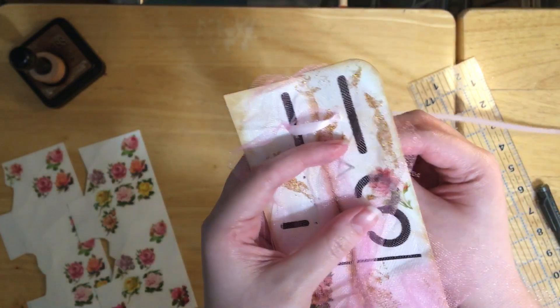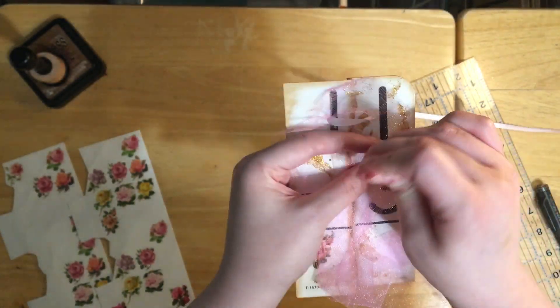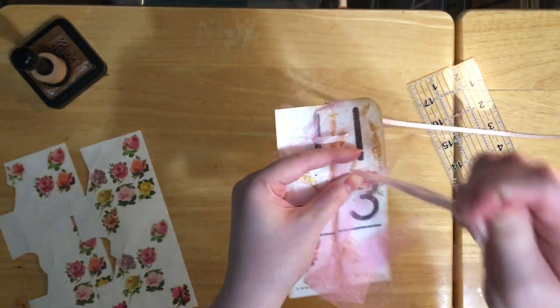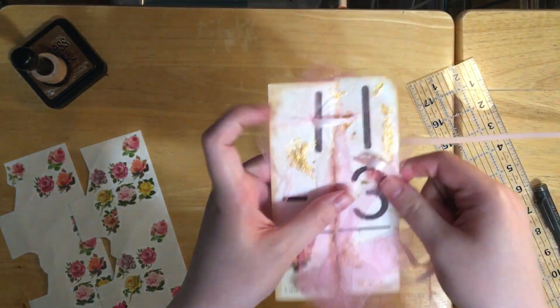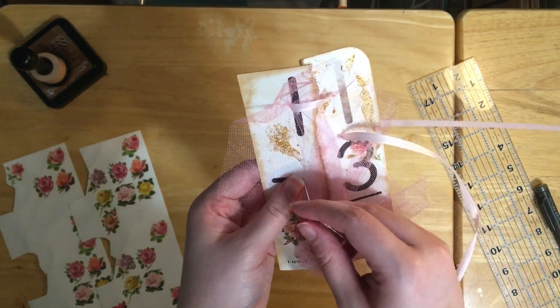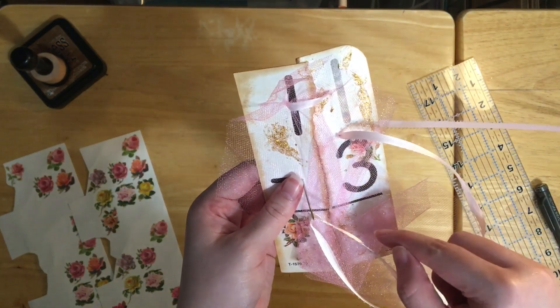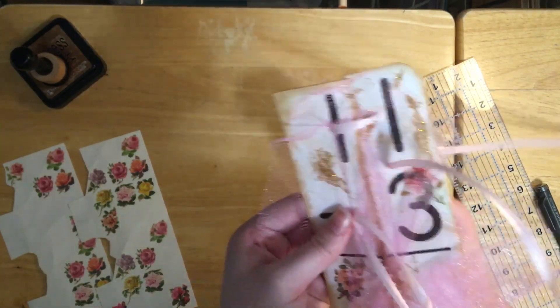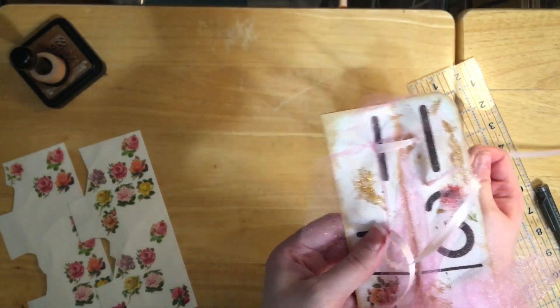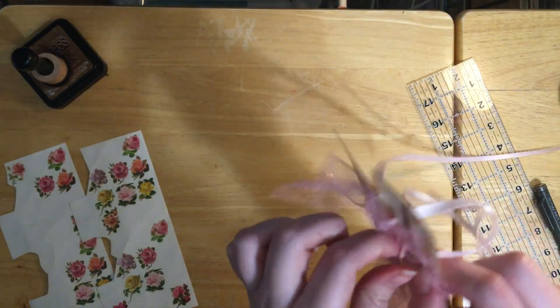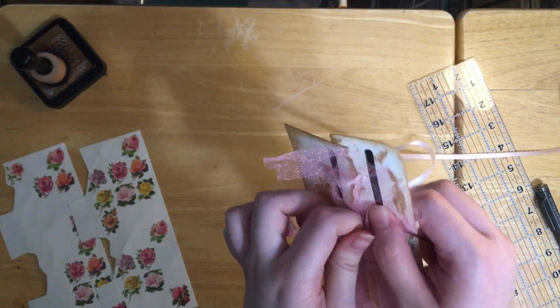The ribbon kind of twists up - you just kind of have to manipulate it and make it do what you want it to. Now we're gonna go into the second hole on the right side from the bottom up to the top. Then I'm gonna cross it down to this corner.